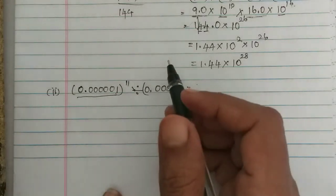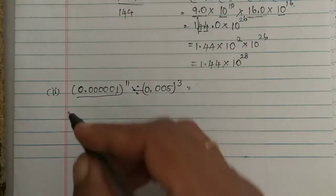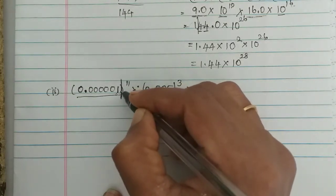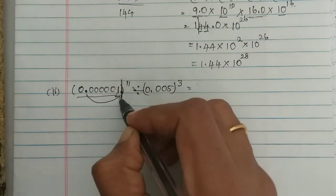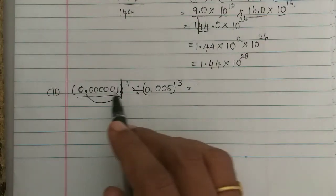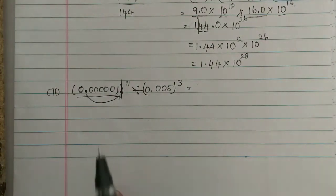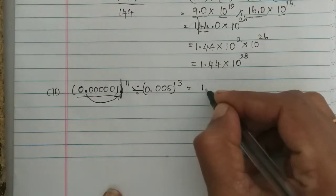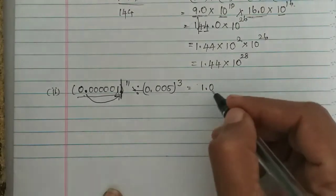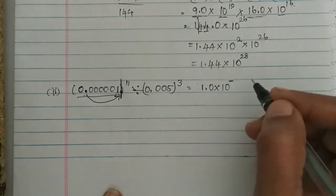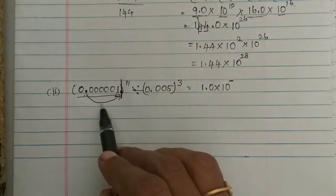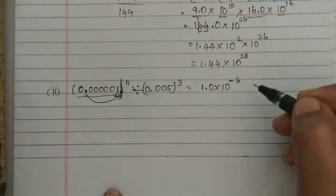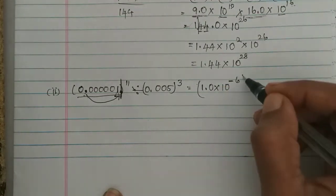For a decimal less than 1, the power of 10 will be negative — minus level. So the point moves: 0.0000001 — counting the decimal places as 1, 2, 3, 4, 5, 6 — gives 1.0 × 10 to the power minus 6. The whole thing is raised to the power 11.